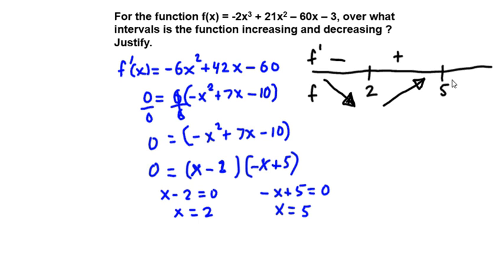To the right of 5, we can pick a number like 6. Well, -6 + 5, that's negative. And -6 - 2 is negative. So negative times positive is negative.